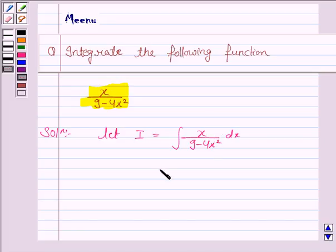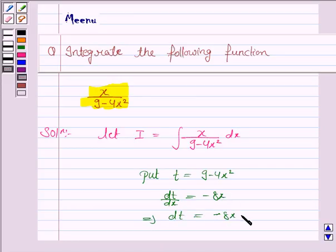So we put t equal to 9 minus 4x square. So dt by dx is equal to minus 8x and this implies dt is equal to minus 8x dx.